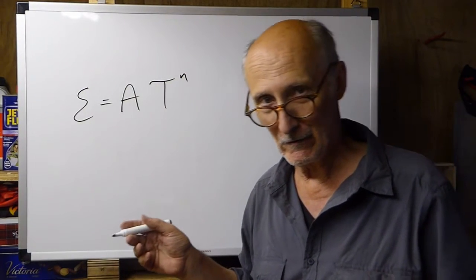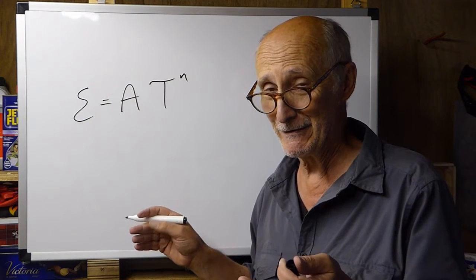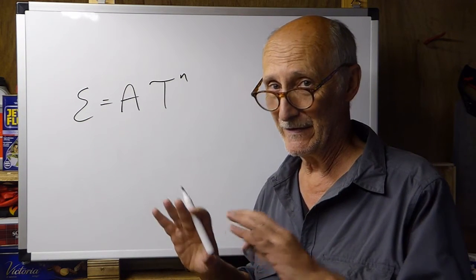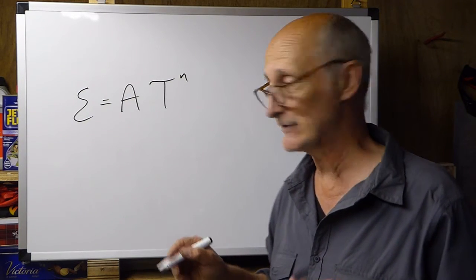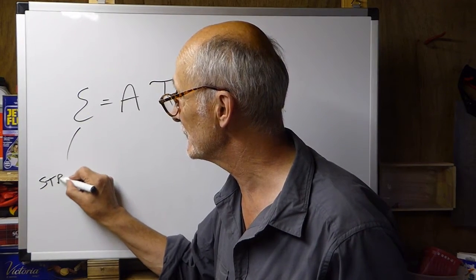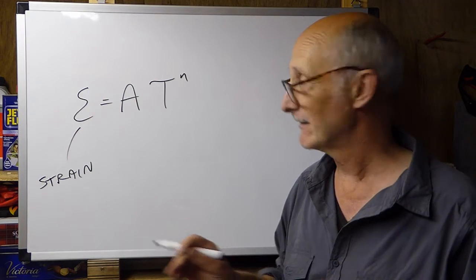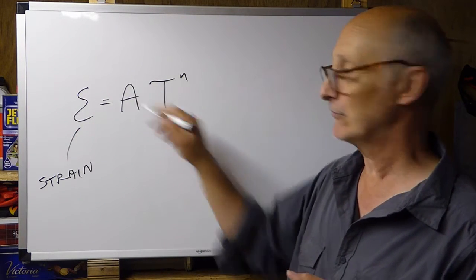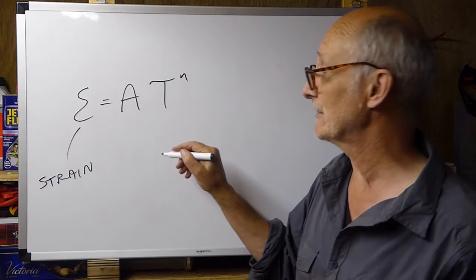Now, equations look scary sometimes because there are all these notations and figures. Don't worry about that. The two equations that we're going to be looking at in this module, they're simply descriptions of how lists of things connect to each other. So, e is simply the symbol for the amount of strain or deformation that we're talking about. So, the amount of strain is equal to this lot over here.